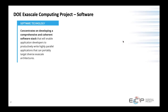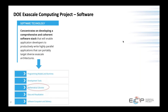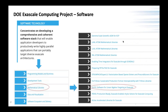The Department of Energy exascale computing program has an applications software stack with key components including mathematical libraries. Within the math software stack are things like PETSc, Trilinos, SuperLU, and SLATE. SLATE is the dense linear algebra library we're producing to run on these exascale machines. I want to stress: this is not a research project — it's a software development project intending to put in place software that will actually run at scale in production.